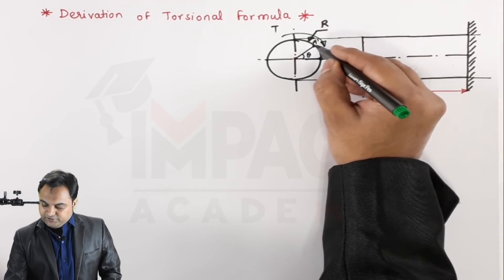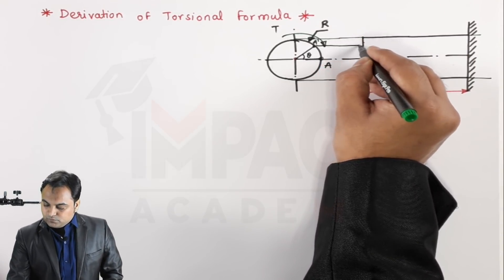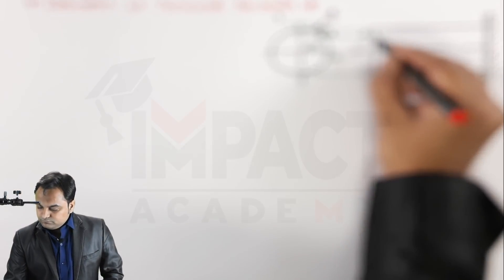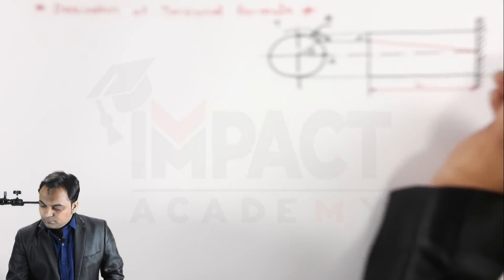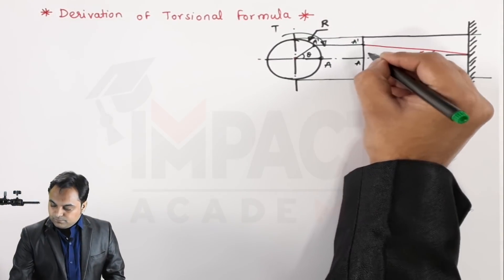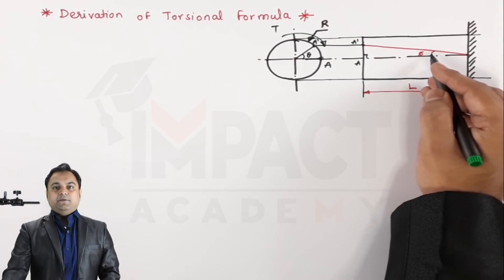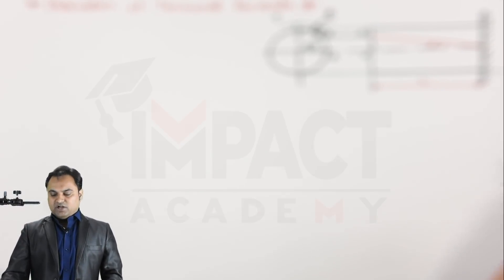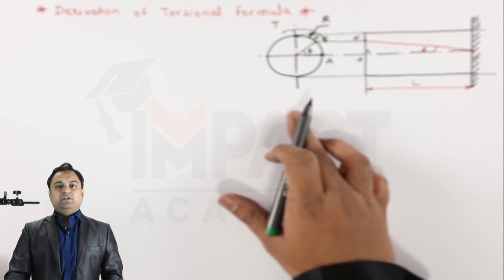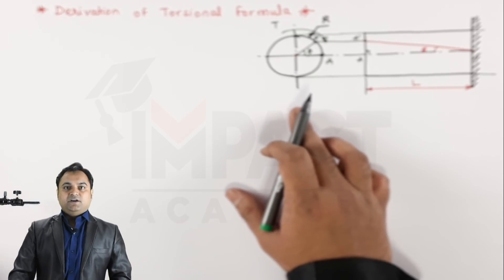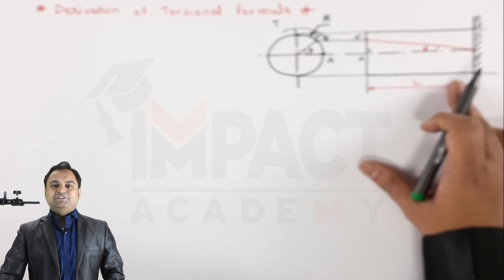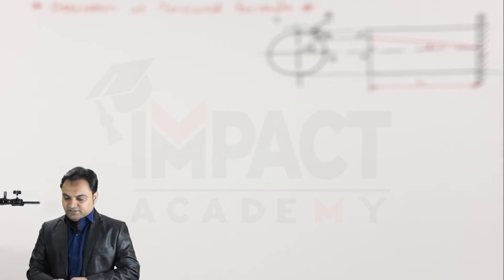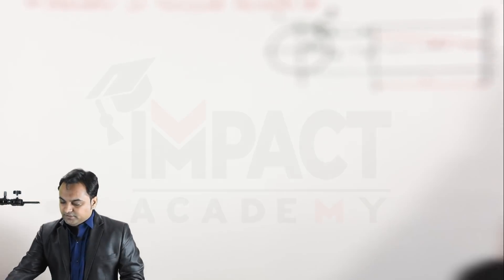I am transferring point A dash onto the other view. The angle of twist is seen as theta in the front view and as phi in the side view.